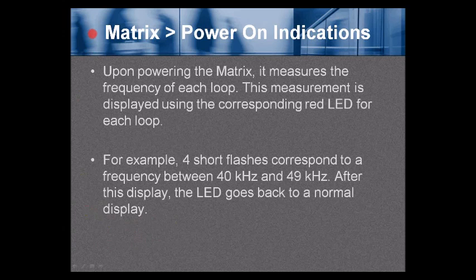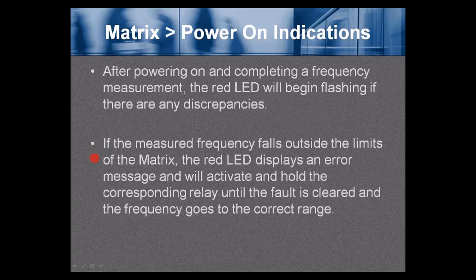Matrix power-on indications: upon powering the Matrix, it measures the frequency of each loop. This measurement is displayed using the corresponding red LED for each loop — for example, four short flashes correspond to a frequency between 40 and 49 kilohertz. After this display, the LED returns to normal operation.